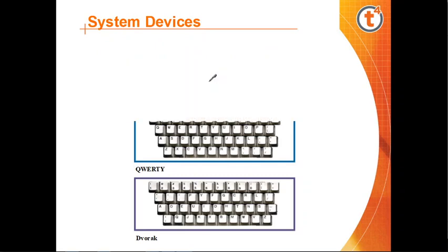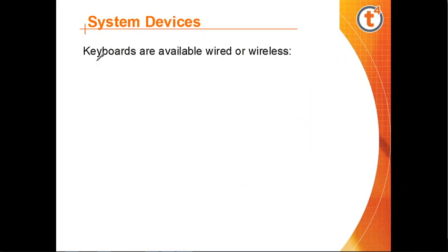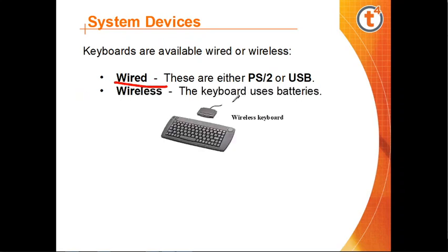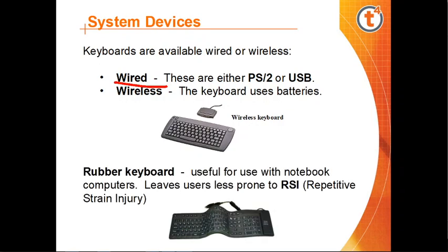As you can see in the pictures, keyboards are available wired or wireless. Wired keyboards connect via either a PS/2 port or a USB port. Wireless keyboards use batteries since they are not directly connected to the CPU, so battery power is used instead. You can also see an image of a wireless keyboard here. Rubber keyboards, made of silicon rubber, are useful for use with notebook computers and leave users less prone to RSI, which stands for Repetitive Strain Injury.